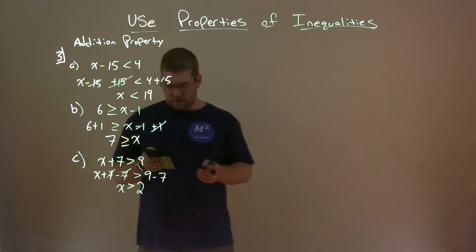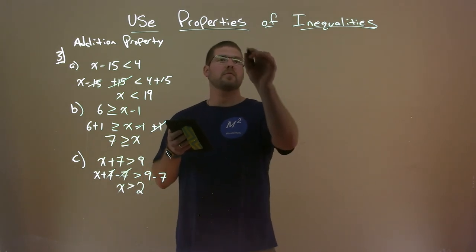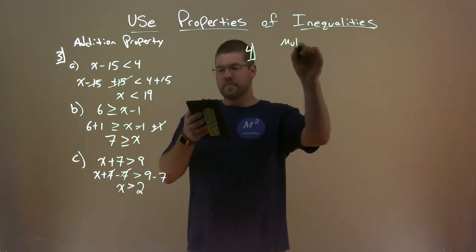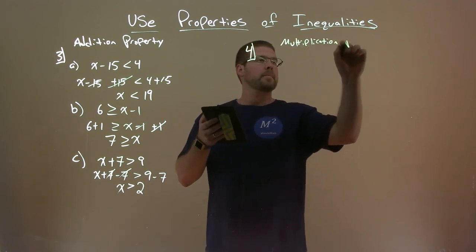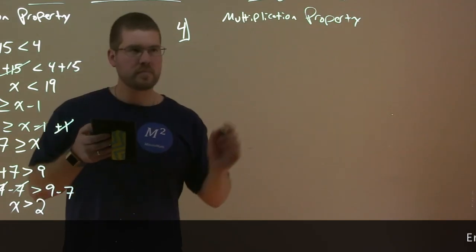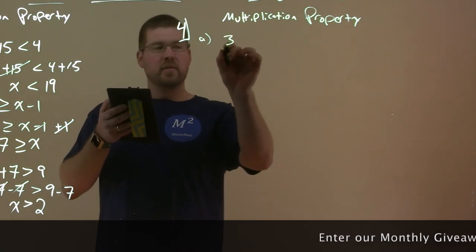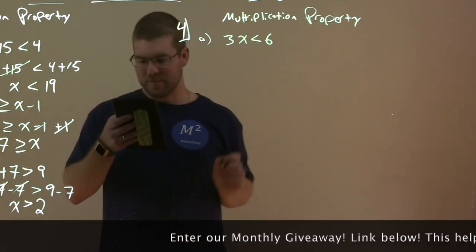So now this one is a little more tricky. We're going to deal and dive into multiplication. Example 4 here, and we're going to use multiplication property. Our first example here, part A, is 3X is less than 6.